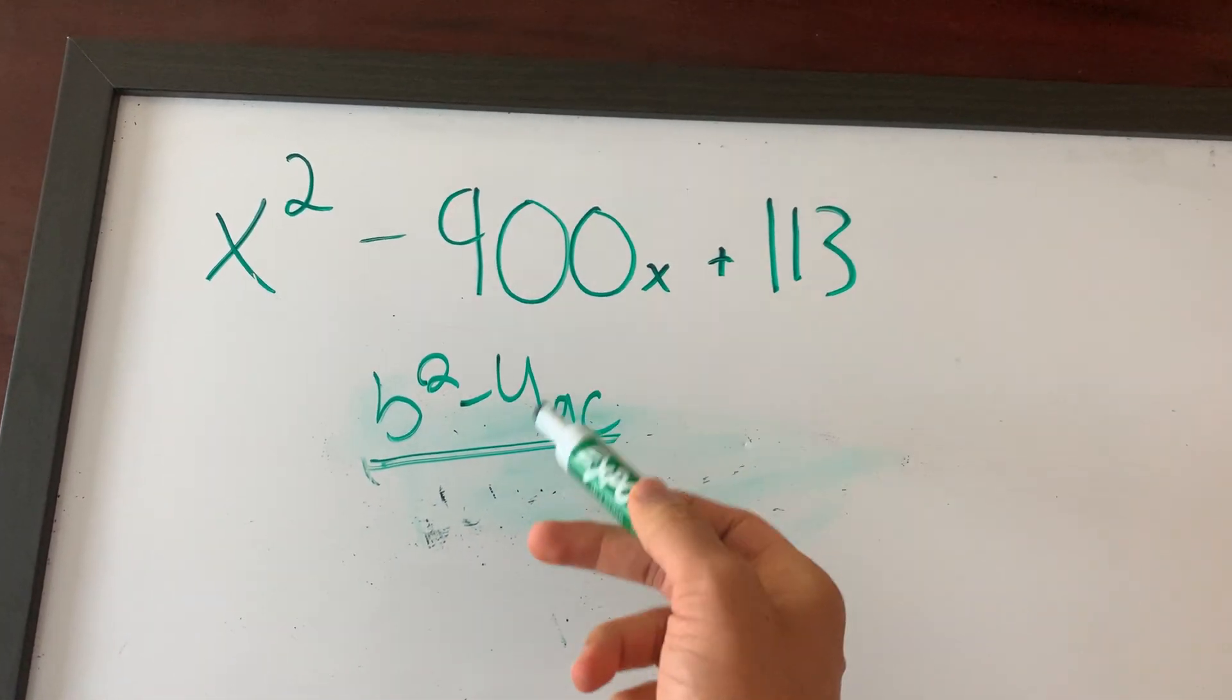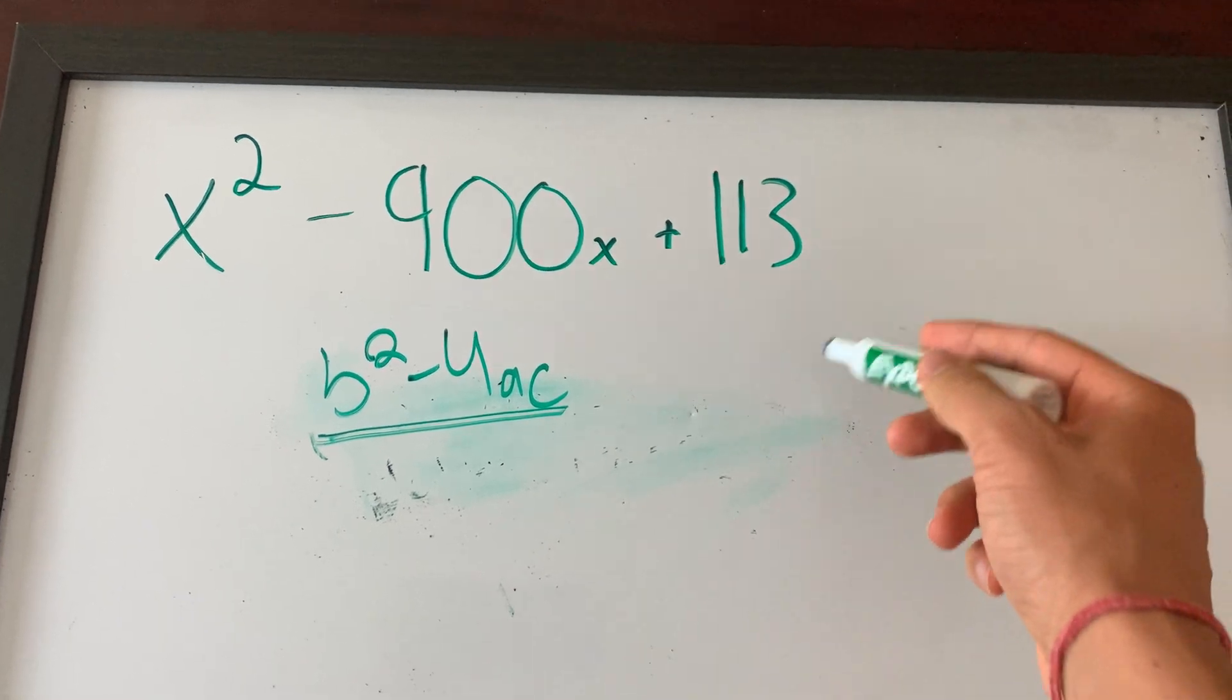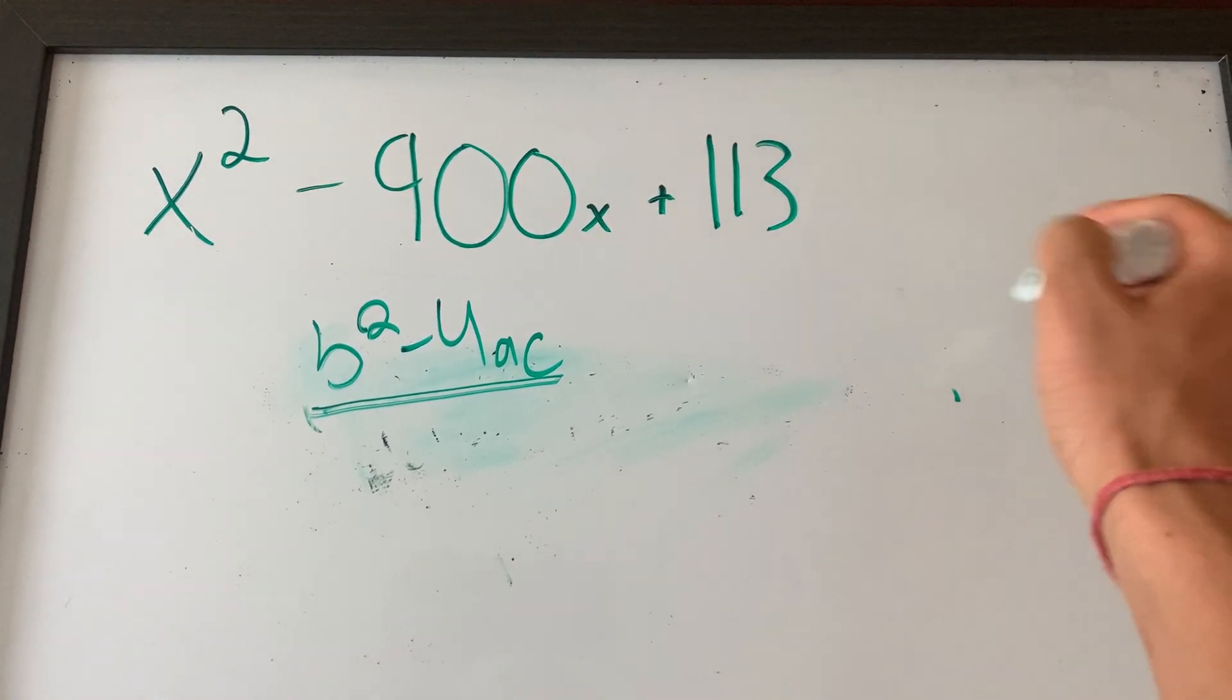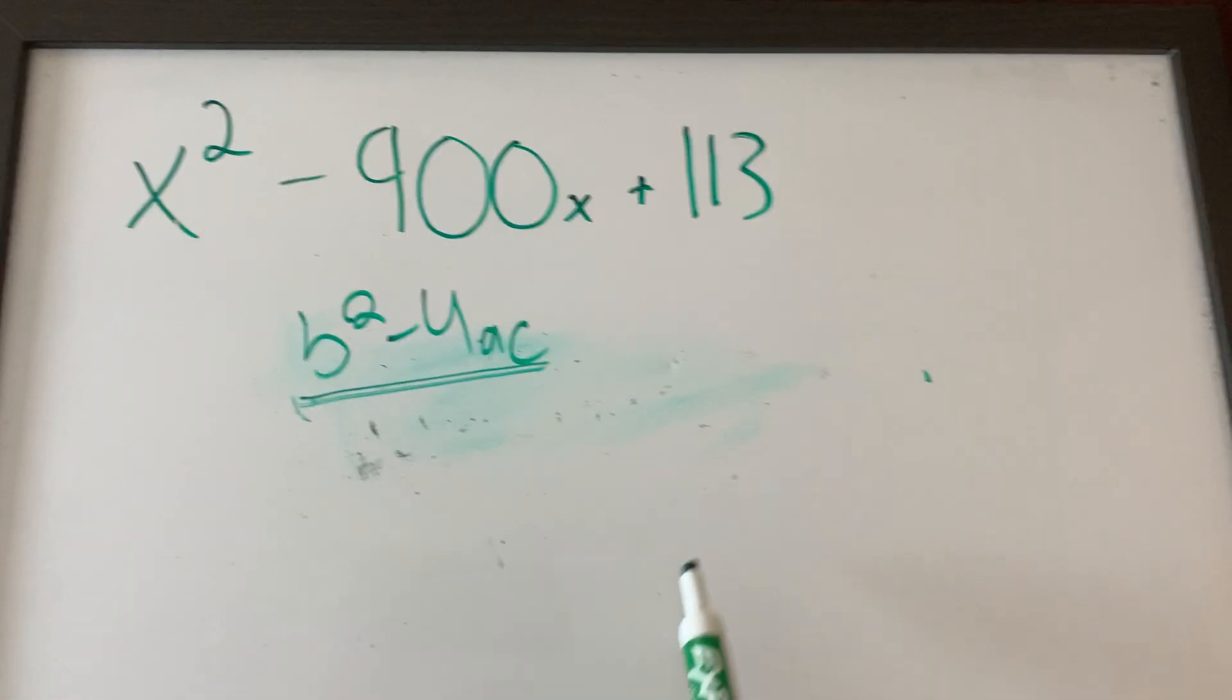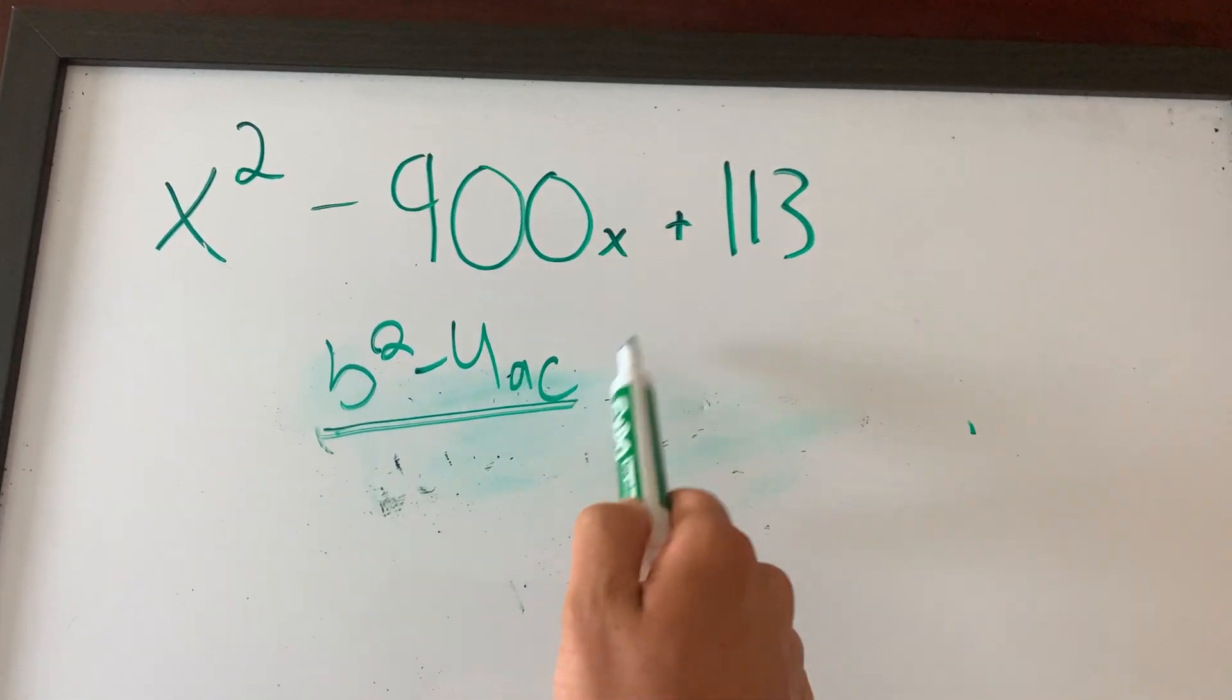Now, you guys look at this, like, hey, it's familiar, right? The quadratic formula, you have negative B plus or minus square root of B squared minus 4ac over 2a. The B squared minus 4ac, like I said, is called a discriminant.